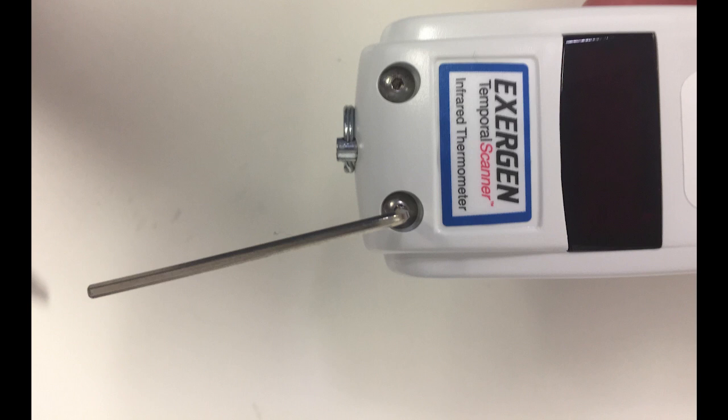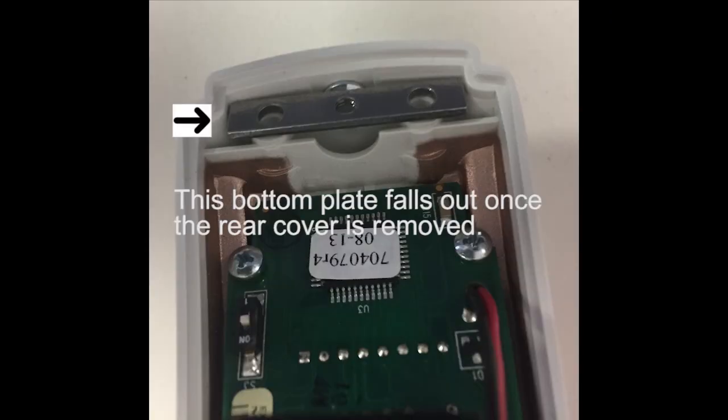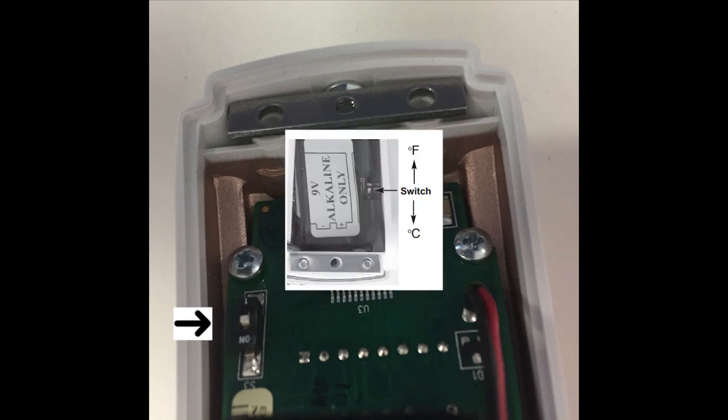So this is the hex key to remove the two lower screws. The case comes apart and it is these two metal plates that fall out so you have to be careful. And there is a temperature selector switch there to be careful of as well.